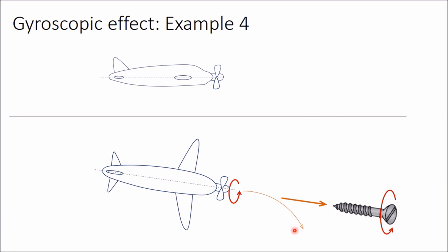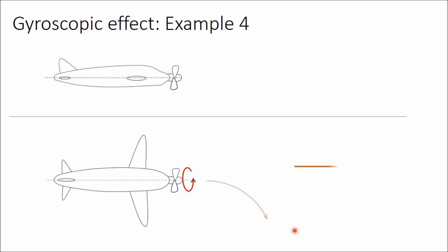So you can draw the vector diagram: this is the initial angular momentum, and if it is taking a right turn, this will be the final momentum after a small time dt. The vector from start point to end point is the active gyroscopic couple, and just opposite to this will be the reactive gyroscopic couple.